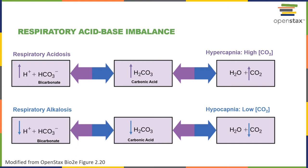The next important variable to pay attention to is the partial pressure of carbon dioxide in the arterial blood. An elevated partial pressure of carbon dioxide is known as hypercapnia, and hypercapnia is associated with acidosis of a respiratory cause. For example, if the pulmonary ventilation rate is too low — if you're not breathing quickly enough to remove sufficient carbon dioxide from the blood — then the partial pressure of CO2 in the blood increases, leading to increased carbonic acid levels and increased hydrogen ion concentration. That is a low pH acidosis as a result of a respiratory cause: the decrease in the pulmonary ventilation rate.